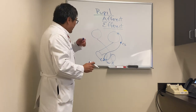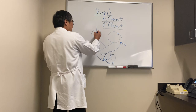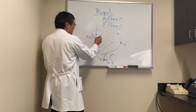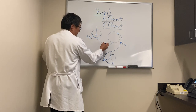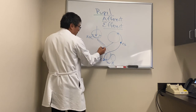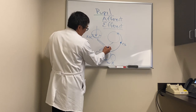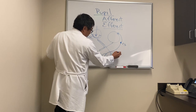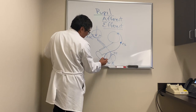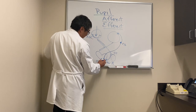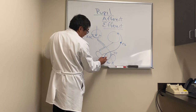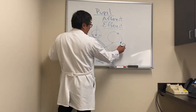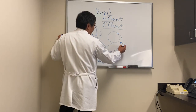The afferent signal starts in the retina at the level of the retinal ganglion cell and travels along the optic nerve. The temporal fiber remains uncrossed and the nasal fiber crosses, but the pupil fiber then comes off the optic tract to go to the pretectal nuclei in the dorsal midbrain, and then to the efferent pathway which is carried on cranial nerve 3.